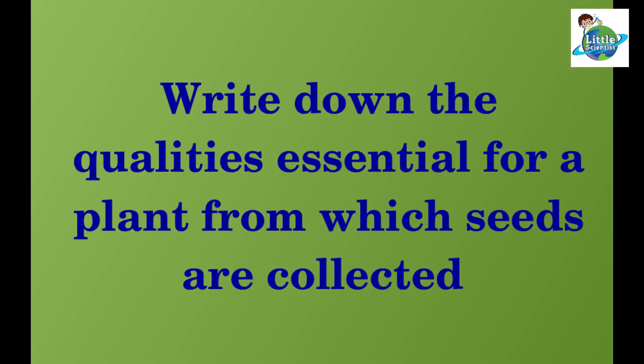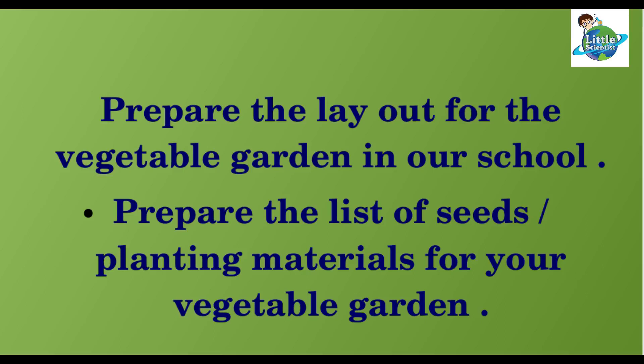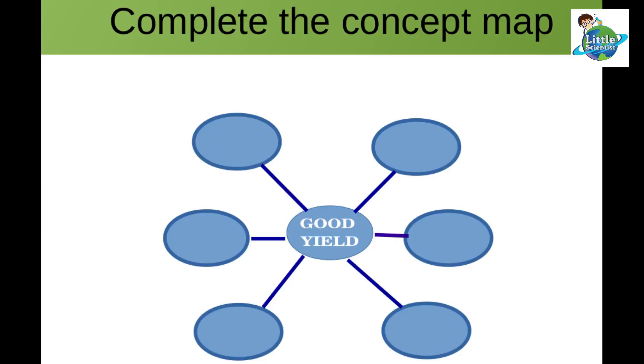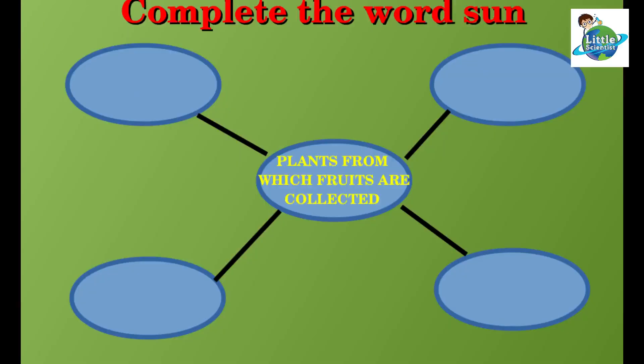Take down the qualities essential for a plant from which seeds are collected. Prepare the layout for the vegetable garden at your home. Prepare the list of seeds and planting materials for your vegetable garden. Complete the concept map on good yield. Complete the concept map — plants from which fruits are collected.